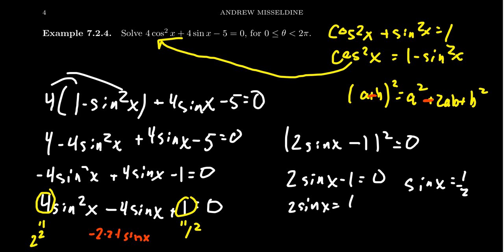Sine is positive in the first and second quadrants. In the first quadrant, x = π/6 (we're solving in radians). In the second quadrant, we need the angle that references π/6, which is π - π/6 = 5π/6.